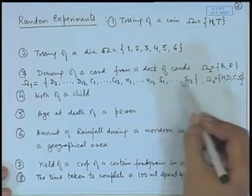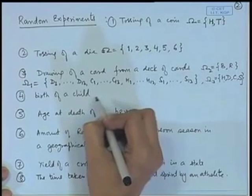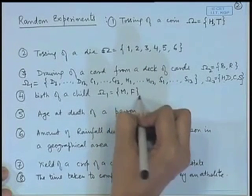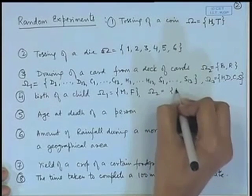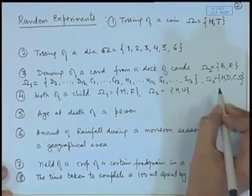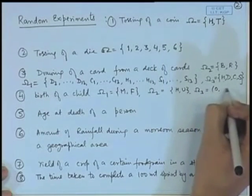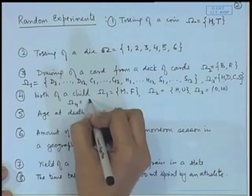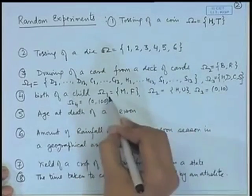This shows that the sample space is not a unique thing — what we are interested in will decide what the sample space is. If we are looking at the birth of a child, we may record whether the child is male or female, whether the child is healthy or unhealthy, the body weight at birth (a number from say 0 to 10 pounds), or even the total life of the child (say 0 to 100 years). It depends on our actual interest, and we write the sample space accordingly.